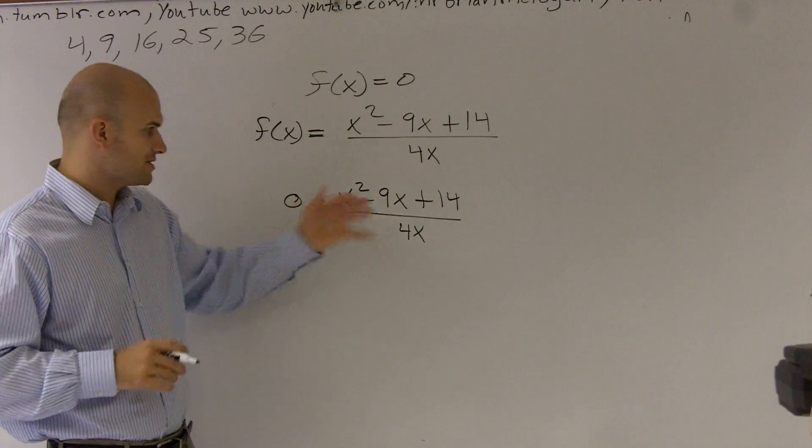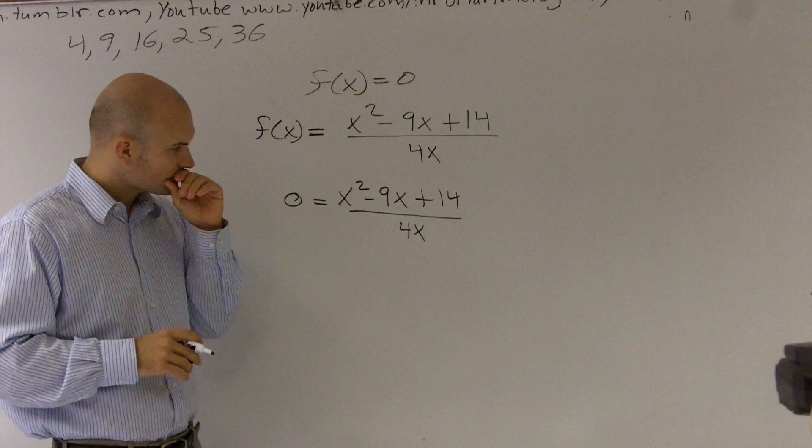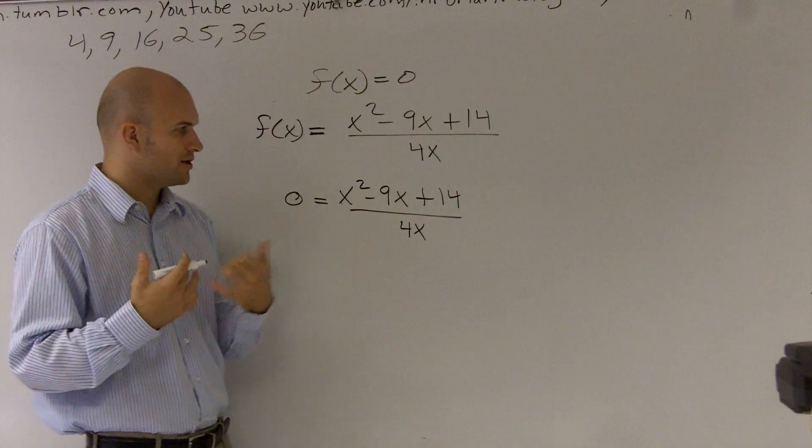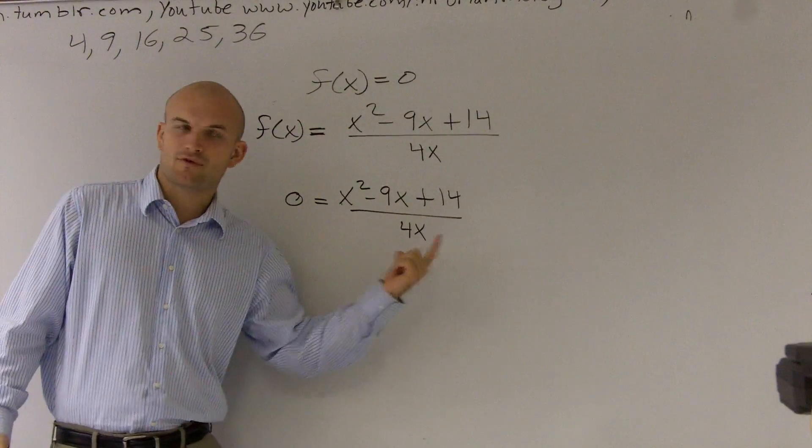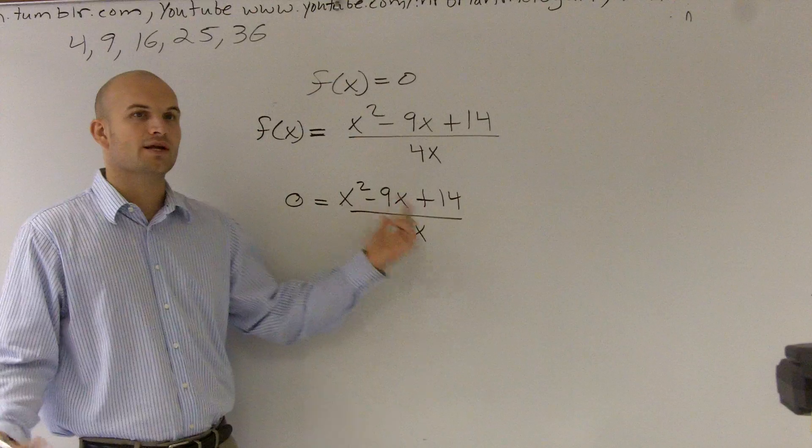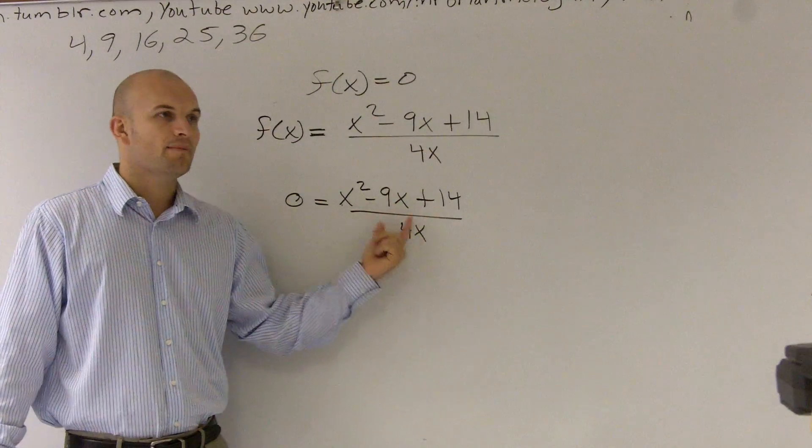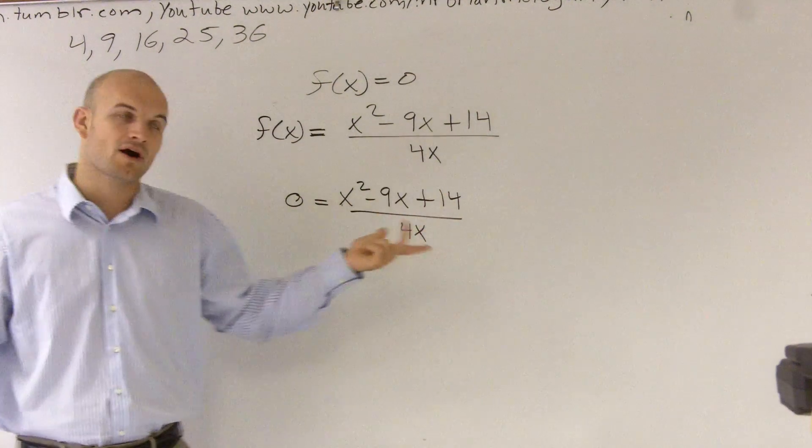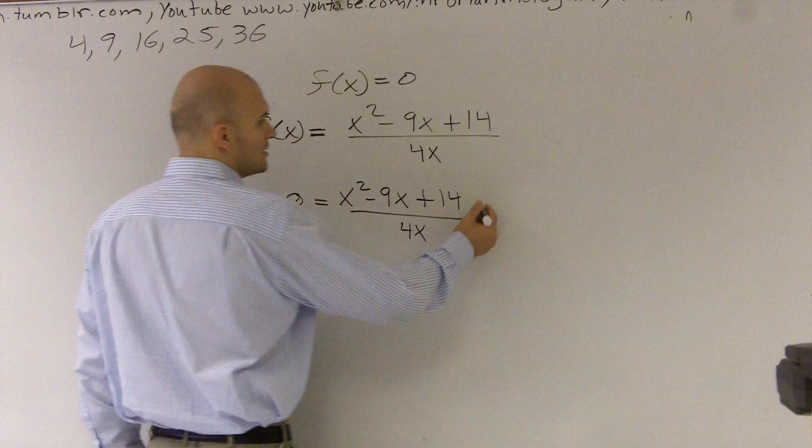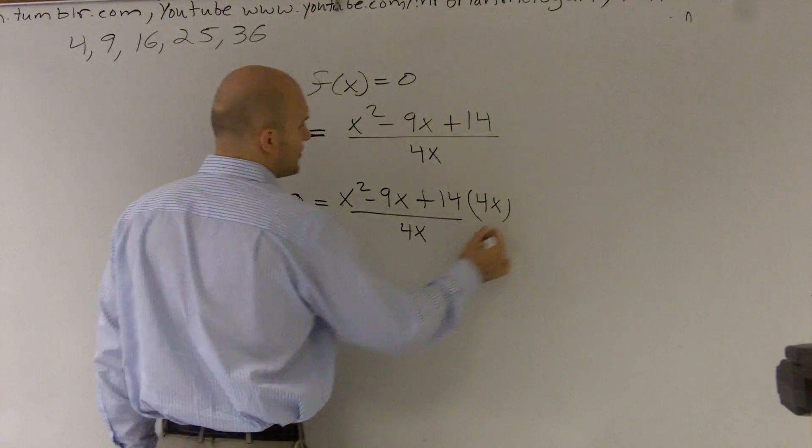And we have another term on the bottom. So to get rid of a rational expression, we can always look at, well, if we multiply by what's on the bottom, that's going to cancel out to one, and we can get rid of our fraction, our rational expression. So I'm going to multiply by 4x on both sides.